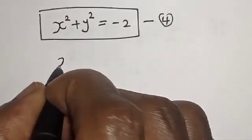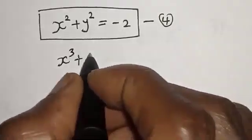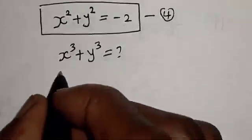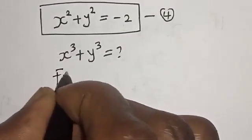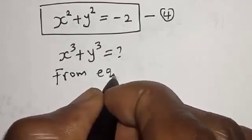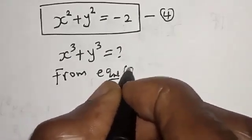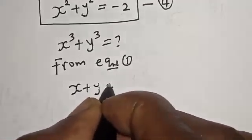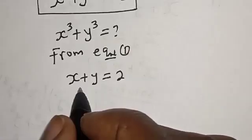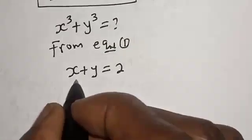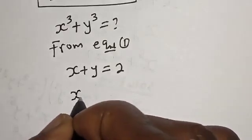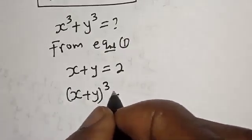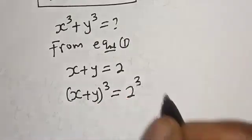We still need the value of x raised to power 3 plus y to the power of 3 — this is unknown. Also from equation 1, x plus y is equal to 2. Let's raise both sides to the power of 3: x plus y raised to the power of 3 is equal to 2 to the power of 3.